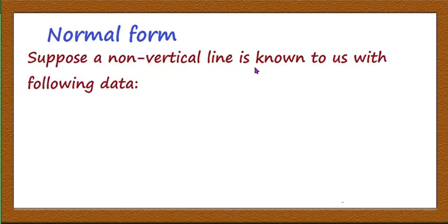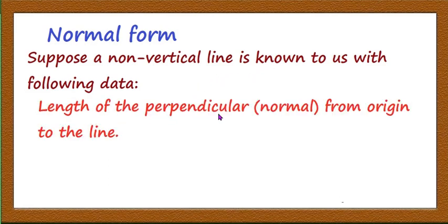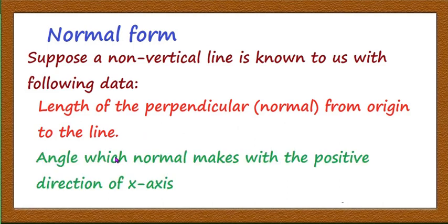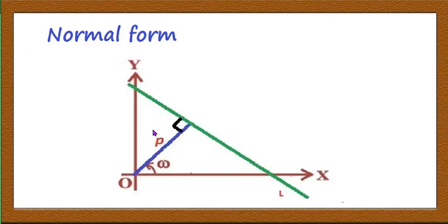Now let us come to the last form, which is called the normal form. Suppose a non-vertical line is known to us with the following data: the length of the perpendicular or normal from the origin to the line, and the angle which the normal makes with the positive direction of the x-axis. If these two data are known, it is possible to find the equation of the line. The length of perpendicular is denoted by p, and the angle made by the normal with the positive x-axis is omega.